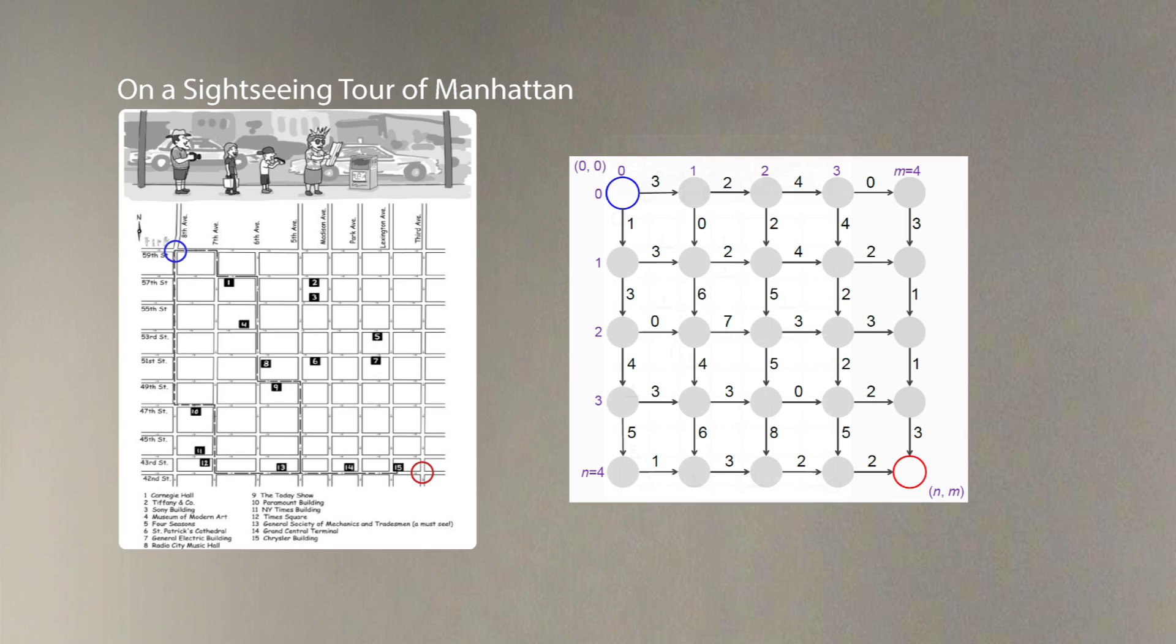We can actually try to solve this problem in an arbitrary grid with arbitrary number of attractions like this grid shown here. There are many different ways to travel in this grid. For example, we can travel like this, and in this case we will visit 18 attractions. The length of the longest path is 18.